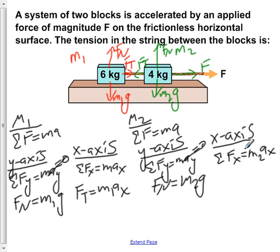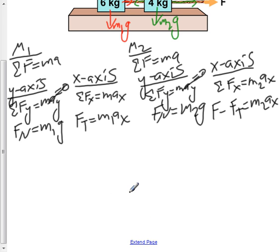If we now plug in for the sum of the forces here, we would have F minus force due to tension. This F is directed to the right, force of tension is to the left, and that's going to be equal to m2 times ax. Now we have to determine what the force of tension is, so we have to solve a system of two equations. We have force of tension is equal to m1 ax, and F minus the force of tension is equal to m2 ax.